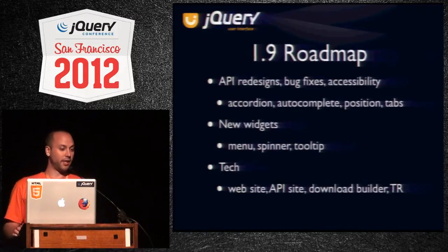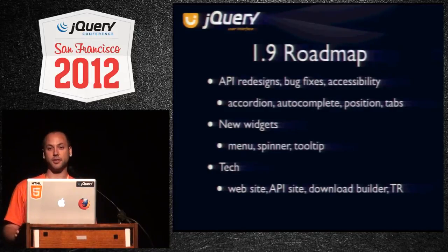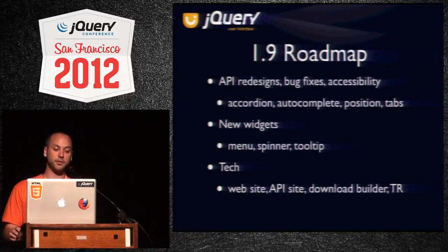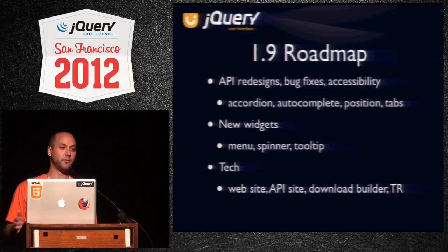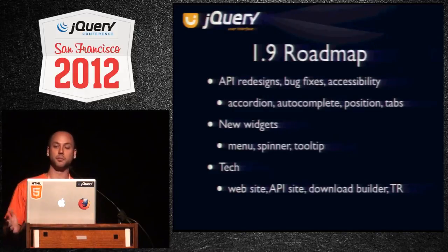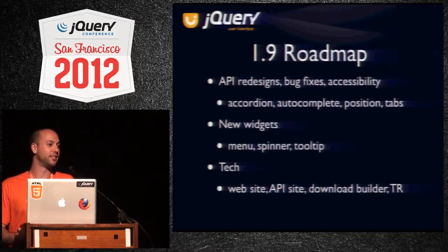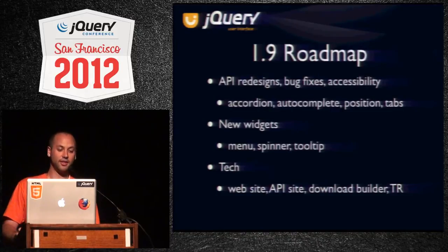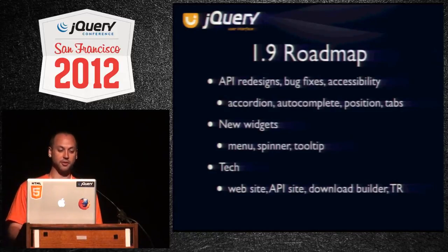So what we ended up doing with 1.9: we did the API redesigns, bug fixes, and accessibility improvements for accordion, autocomplete, position, and tabs. Position doesn't have any accessibility concerns because it's just positioning an element, but everything else has been fully tested across multiple operating systems, multiple screen readers, and multiple browsers. Testing with accessibility is even more painful than just cross-browser testing, but it's fully accessible, so that's a huge improvement.